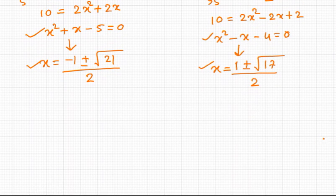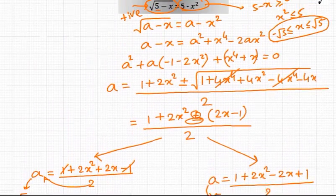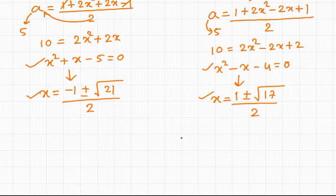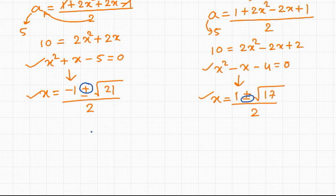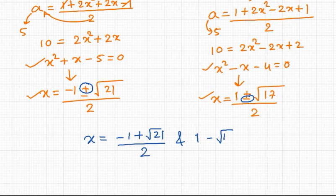Since x must lie within the domain of minus root 5 to plus root 5, which is approximately minus 2.2 to plus 2.2, we need to choose only those solutions within this domain. From the two possibilities in each equation, the minus sign is chosen from the first equation and the plus sign from the second, ensuring the roots lie within the domain. The final answers are x equals (minus 1 plus root 21) divided by 2, and x equals (1 minus root 17) divided by 2.